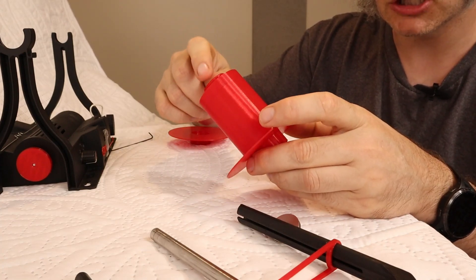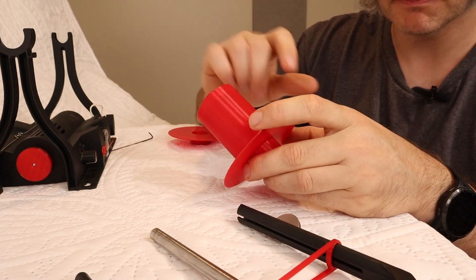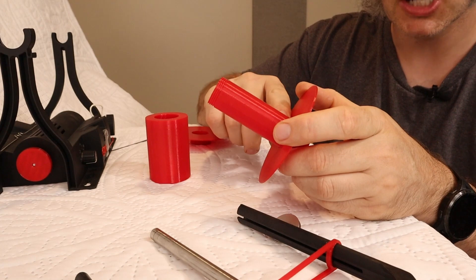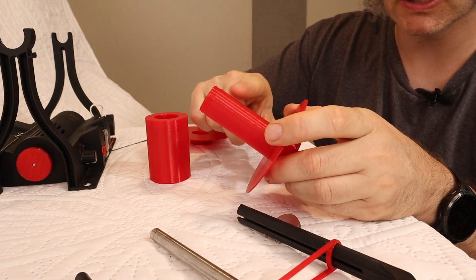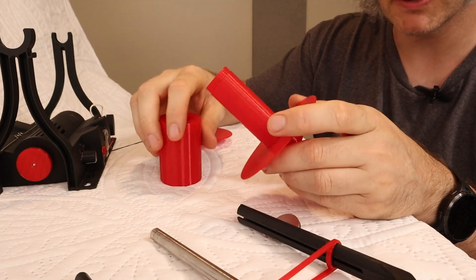And that lets you worry less about, or you'll have less changes to your tension as you're filling up the bobbin. So the thing that causes changes in your tension as you're filling it up is that this diameter is smaller than this diameter. So this just kind of evens that out a bunch.